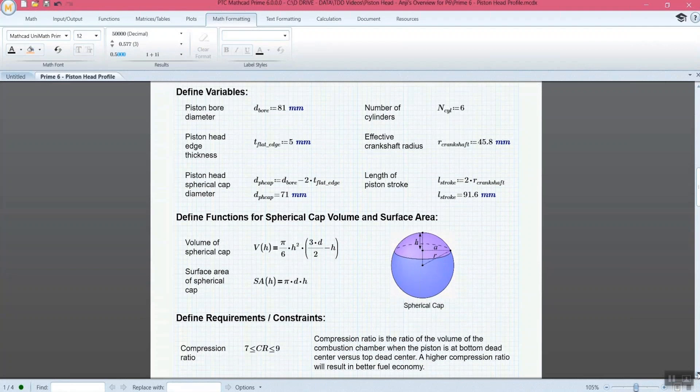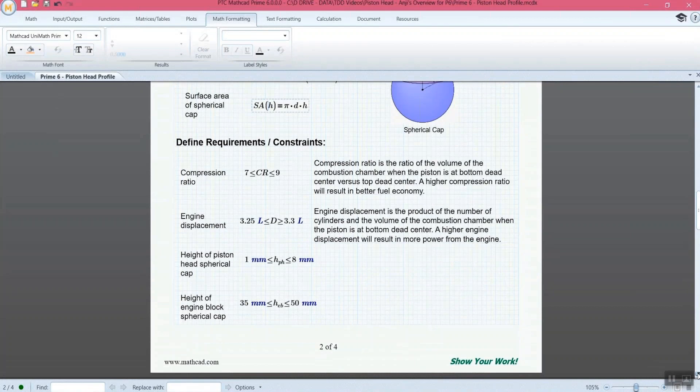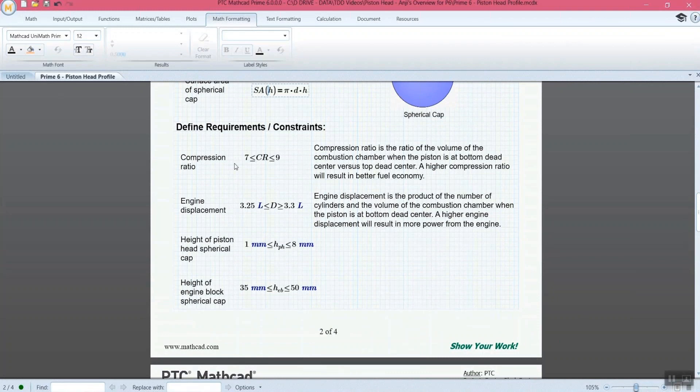You see here we've included this image. We have a spherical cap that defines where H and A and R are defined, what links those are on the triangle, on the sphere. And then we have our functions here. So this is a function of height. The surface area is a function of height. And we're going to use those later. So later, if we want to solve for volume or surface area, it knows that's pi times diameter times height.